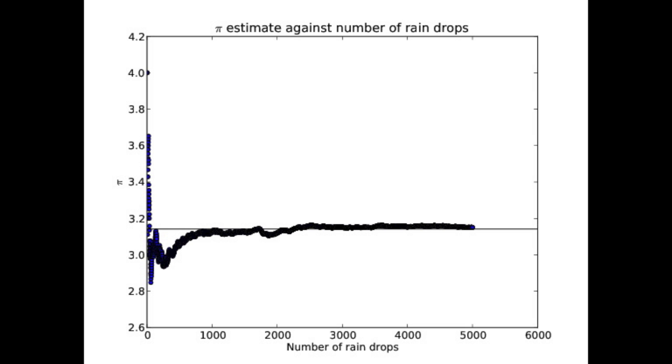Now, if we wanted pi to a higher level of precision, we'd probably have to draw a lot more raindrops. And in fact, this is a terribly inefficient way of getting pi, but it's a nice bit of fun with a computer.